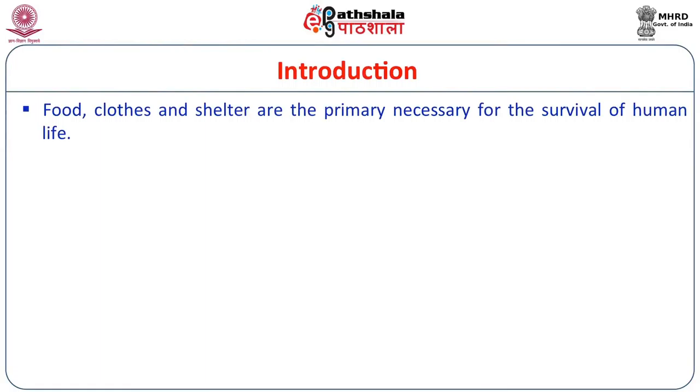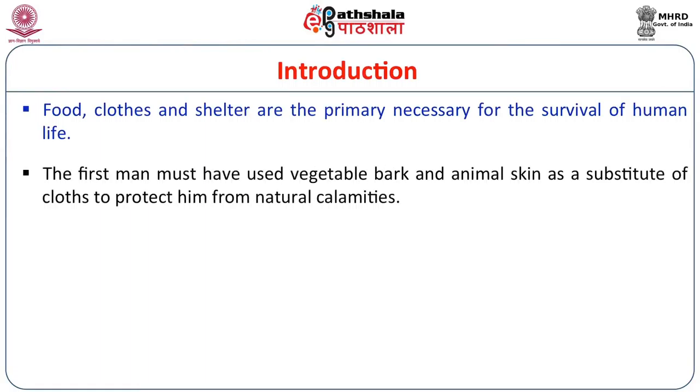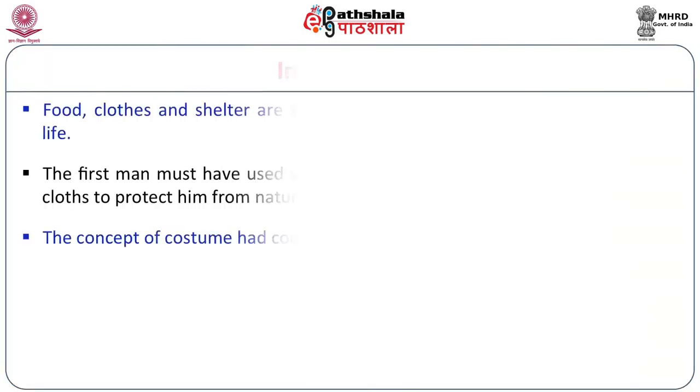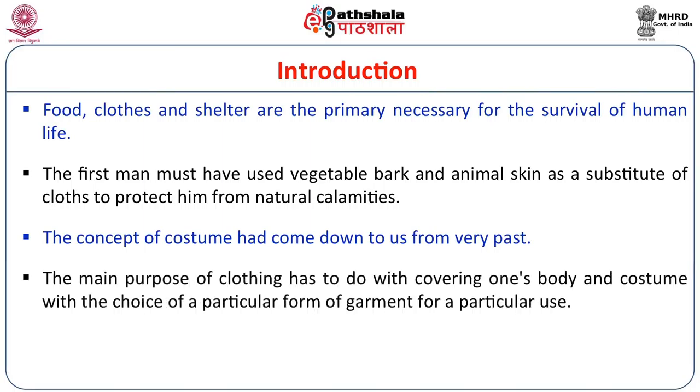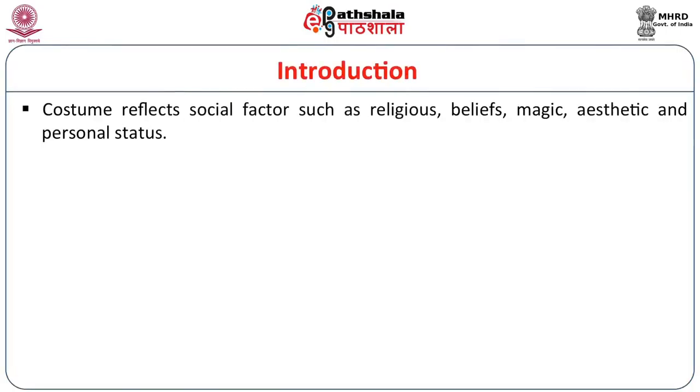Food, clothes and shelter are the primary necessity for the survival of human life. The first man must have used vegetable bark and animal skin as a substitute for clothes to protect himself from natural calamities. As mentioned before, there was a shift from use of natural things to use of cotton and silk. The concept of costume has come down to us from the very past, and with progress in society, from a very early simple society becoming more complex, there is a change in dressing habits. Costume also reflects social factors such as religious beliefs, magic, aesthetic sense and personal status.